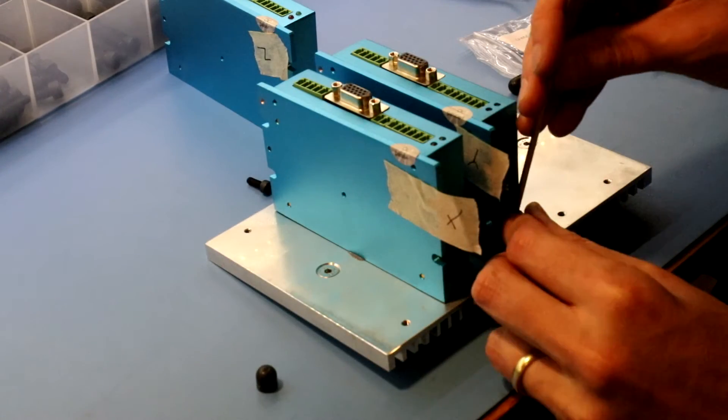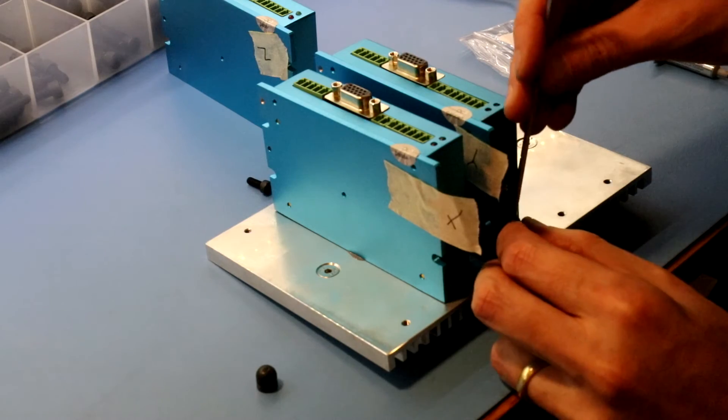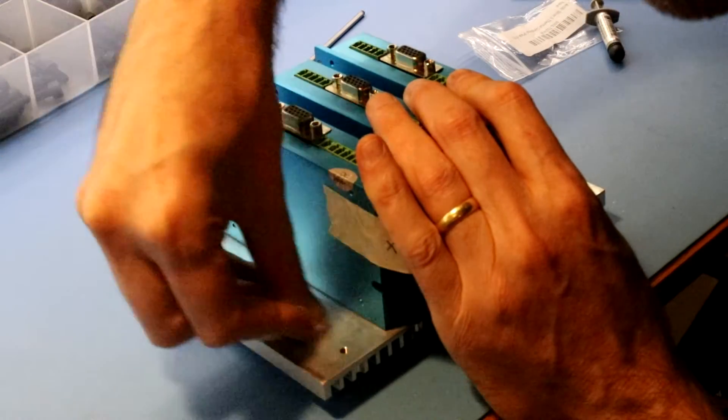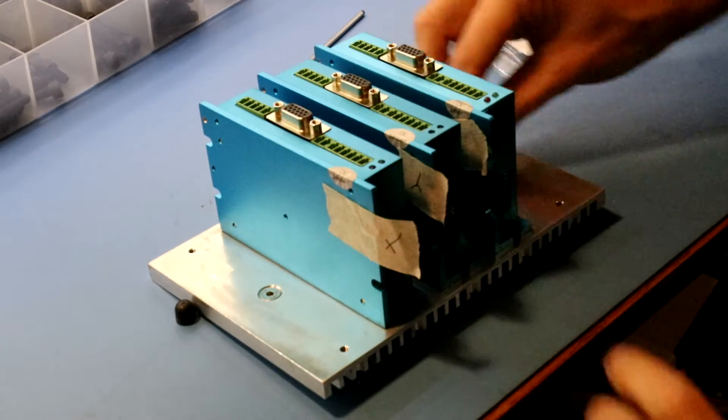The measured resistance between the heat sink and any drive is low and the electrical path is likely through the mounting holes biting into the drive. To ensure better connection, one could consider serrated washers.